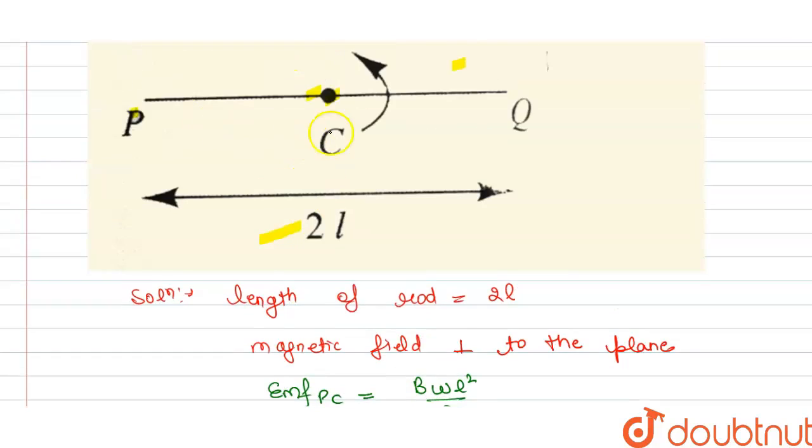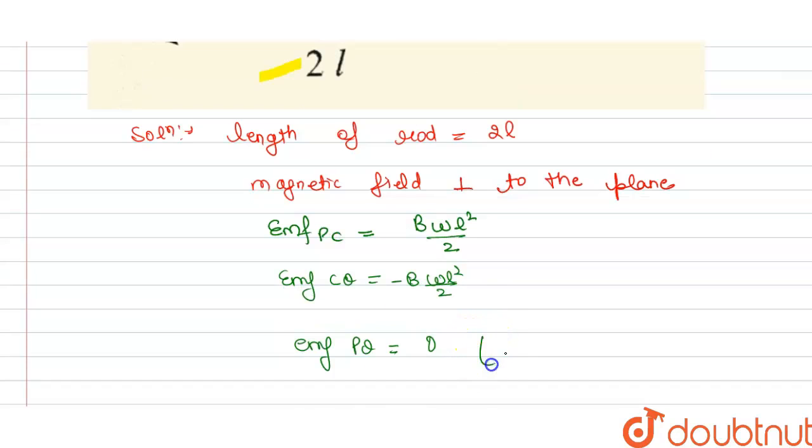And we have the EMF of PQ is 0, as we have to add PC plus CQ. So we get EMF of PC plus EMF of PQ. So adding, this is positive sign, this is negative, so this will become 0.